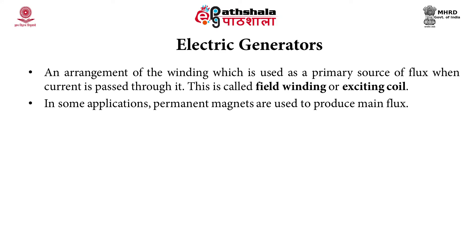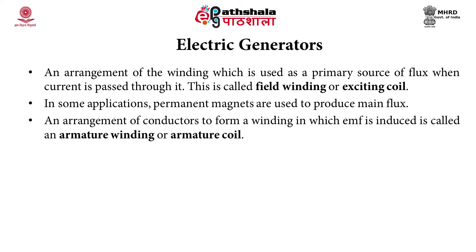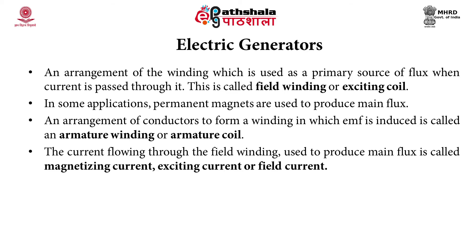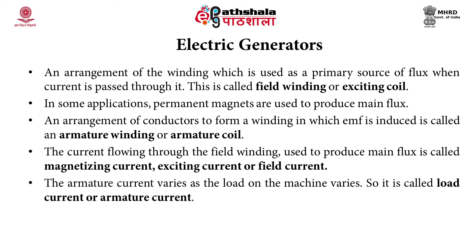In some applications, permanent magnets are used to produce main flux. An arrangement of conductors forming a winding in which EMF is induced is known as armature winding or armature coil. The current flowing through the field winding to produce main flux is known as magnetizing current, exciting current, or field current. The armature current varies as the load on the machine varies, so it is called load current or armature current.